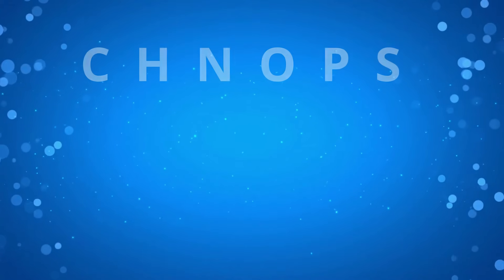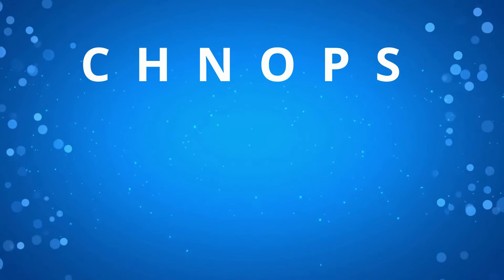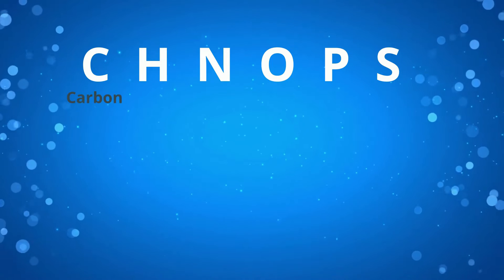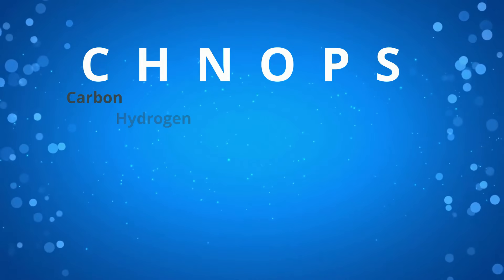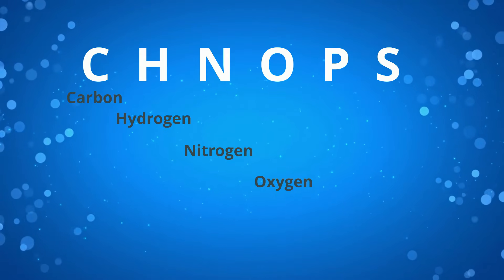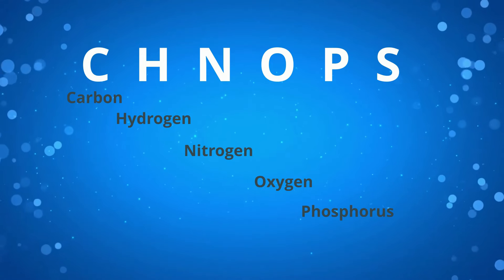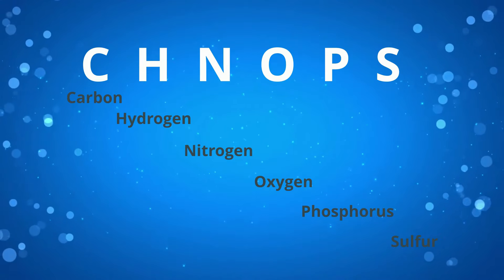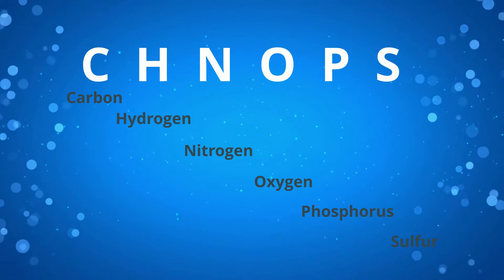You can remember the elements that have biogeochemical cycles using SHINOPS: carbon, hydrogen, nitrogen, oxygen, phosphorus, sulfur. Put them together and you have SHINOPS.